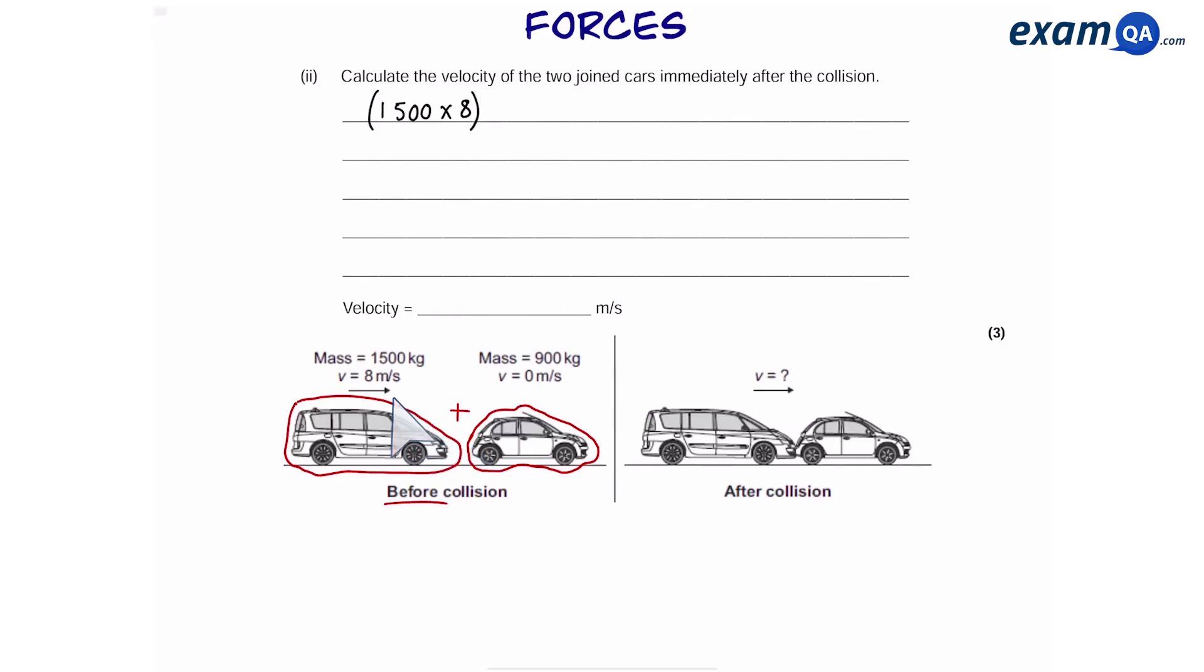That means we have to work out the momentum of each individual moving object and add it together. So for the big car, it's going to be mass times velocity, which is 1500 times 8, plus the small car, which is 900 times 0.